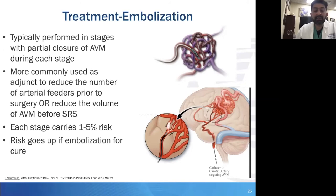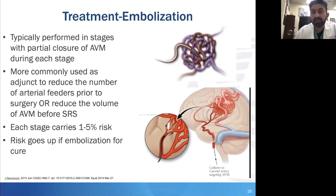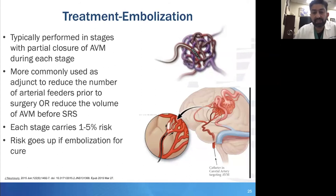When doing transarterial embolization, you want to make sure you don't get liquid embolic into the draining veins, because you can't close off those veins before closing off arterial inflow via a transarterial route. Each stage carries anywhere between a 1% to 5% risk per stage. Glue tends to have a slightly lower per-procedure complication risk than Onyx, but Onyx utilizes fewer procedures for a given AVM. Even when discussing embolization, there is a lot of heterogeneity in deciding what the best embolic agent might be.